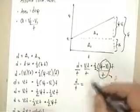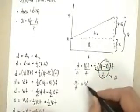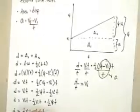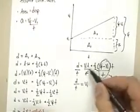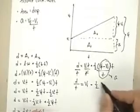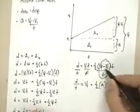So d over t is going to be equal to, well, notice that I'm going to have just a vi, because I'm going to have canceled these t's, plus 1 half. I'm going to put in my acceleration in replacement of this, take that time.